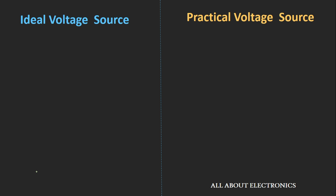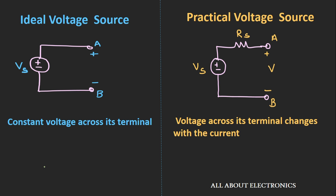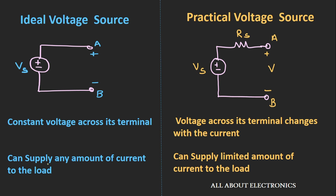Let's summarize the differences between the ideal and the practical voltage source. In the ideal voltage source, it does not possess any series internal resistance — it has zero internal resistance — while in the practical source, it does have some series internal resistance. In the ideal voltage source, the terminal voltage remains constant, while in a practical voltage source, the terminal voltage depends upon the current drawn, and increases in current cause the terminal voltage to reduce. Finally, the ideal voltage source can supply any amount of current to the load, while a practical voltage source can supply only a limited amount of current.